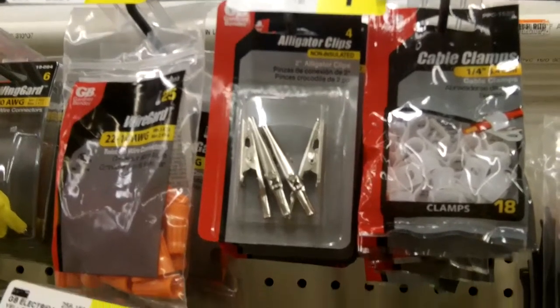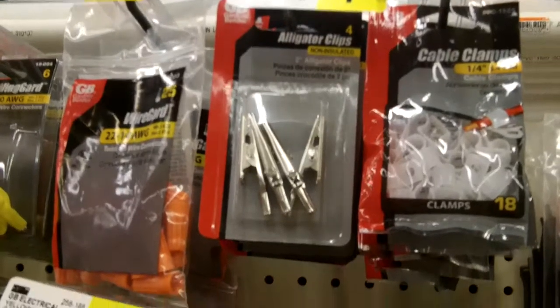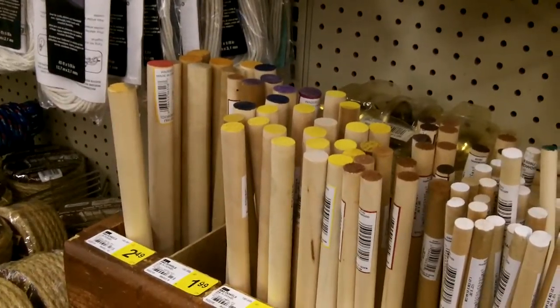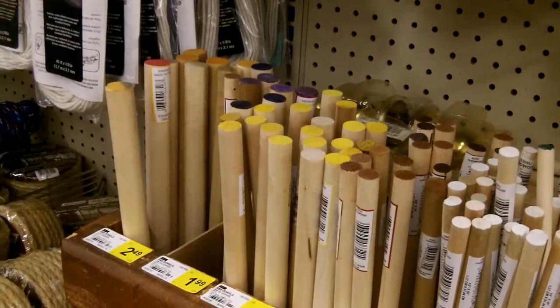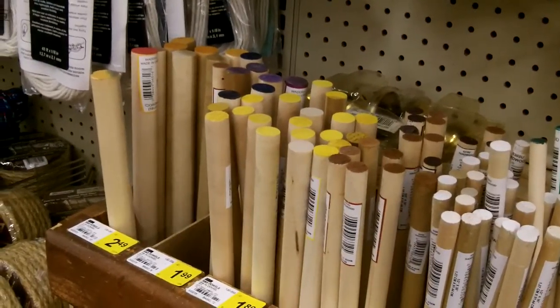To start out with, you will need four alligator clips and they will cost less than two dollars. Next, you will need two sizes of dowels: a one-inch dowel and a half-inch dowel. They are three feet long.